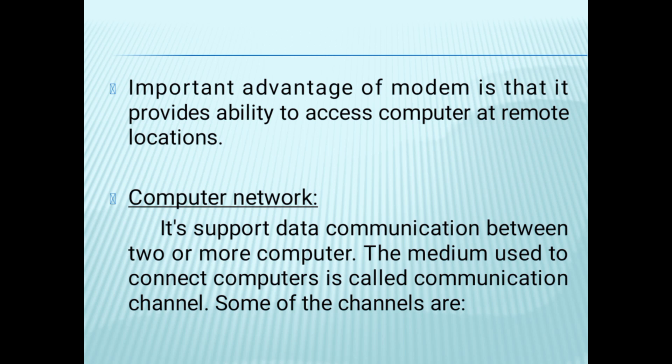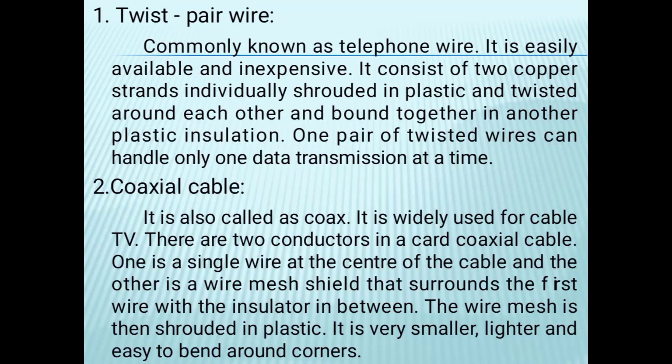Some of the channels are twisted pair wire, commonly known as telephone wire. It is easily available and inexpensive. It consists of two copper strands individually sheathed in plastic and twisted around each other, bound together in another plastic insulation. One pair of twisted wires can handle only one data transmission at a time.